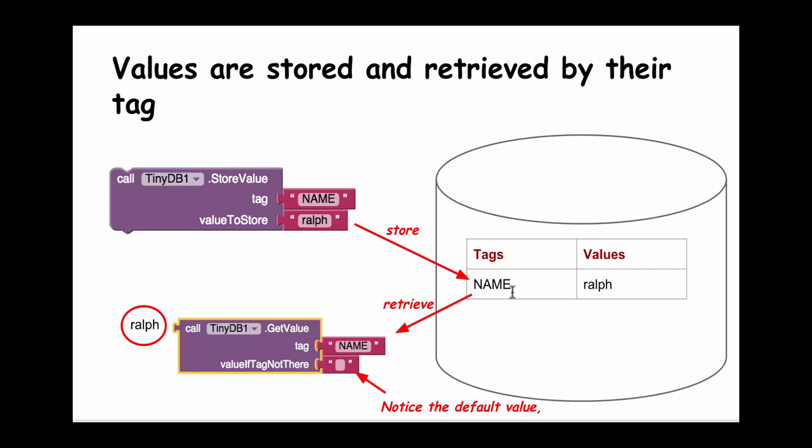When you want to retrieve the name Ralph from the database, what you have to do is fire the getValue block. You need to give it the tag that's associated with the data that you stored in the database. So if I want Ralph, I need to provide the tag NAME here. It has to be identical to the tag you used when you stored the data. Notice the default value.